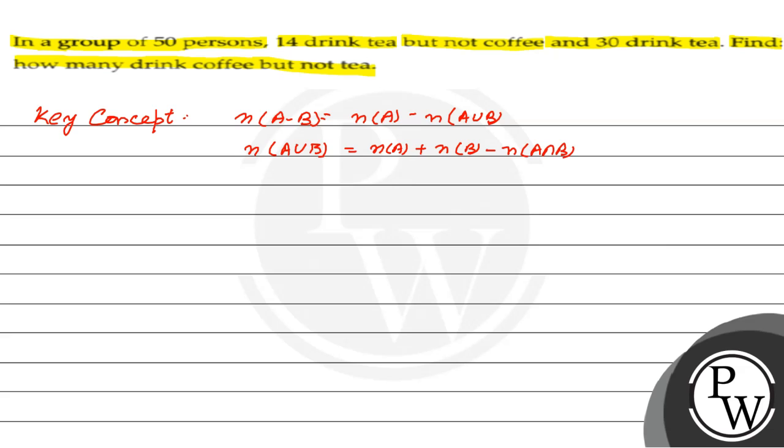Or either N(B minus A) equals N(B) minus N(A intersection B). Right.